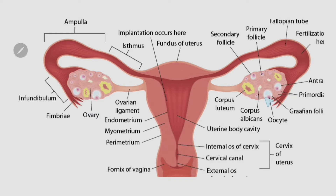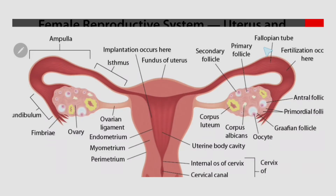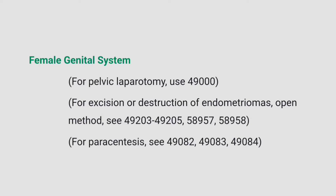Next are the ovaries — small oval-shaped glands located on either side of the uterus. Ovaries produce eggs and hormones. Next are the fallopian tubes — narrow tubes attached to the upper part of the uterus. The fallopian tubes serve as pathways for the egg to travel from the ovaries to the uterus. Fertilization of an egg by sperm normally occurs in the fallopian tube.